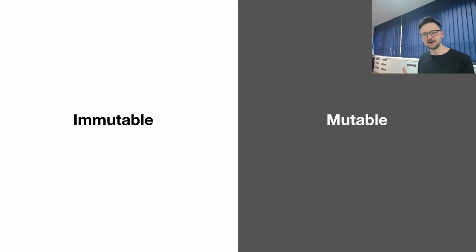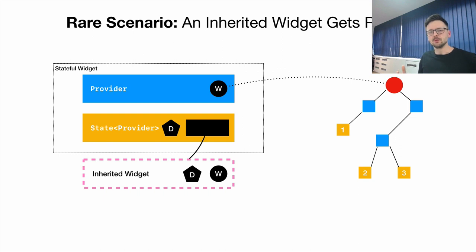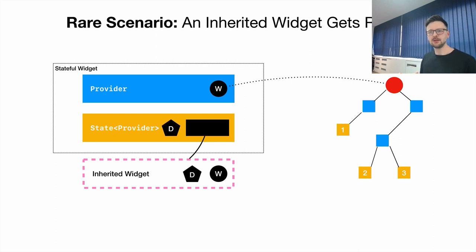Inherited widget is immutable, which means that once you create it you cannot change its data — it's fixed. Now there are two possibilities: there is the light side and the dark side. The dark side is the mutable approach. Because inherited widget is immutable, if you want to change the data you have to create a new inherited widget each time, so the widgets that depend on it can display new data. The only way to do that is to wrap it in a stateful widget, which gives access to `setState`.